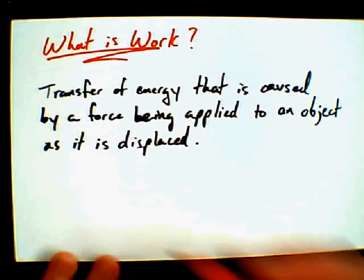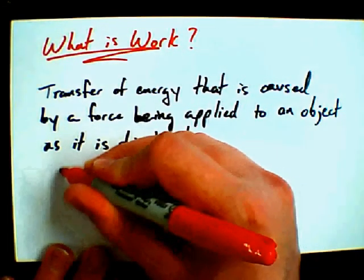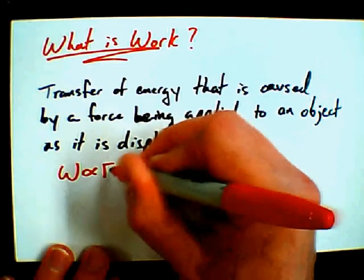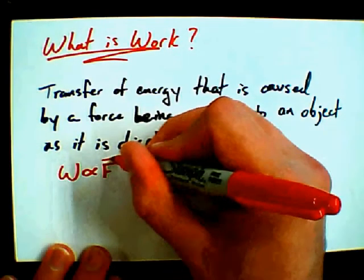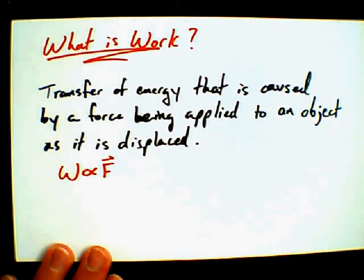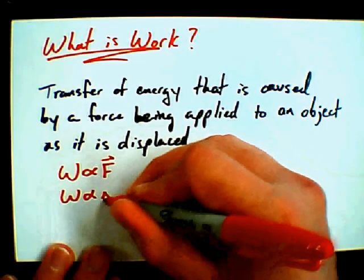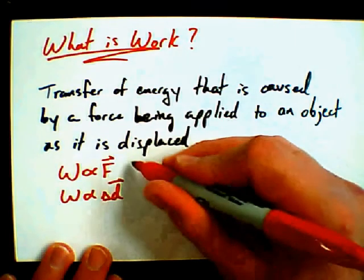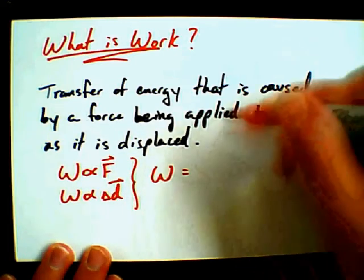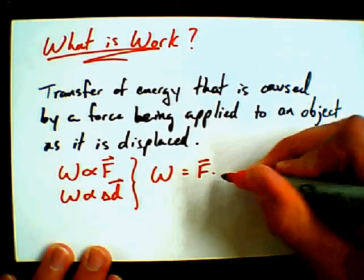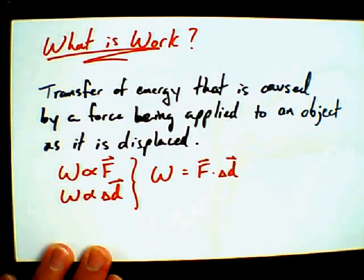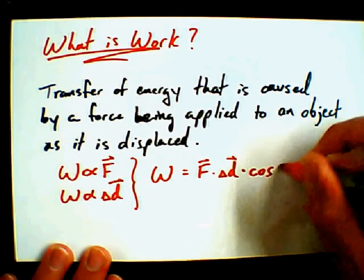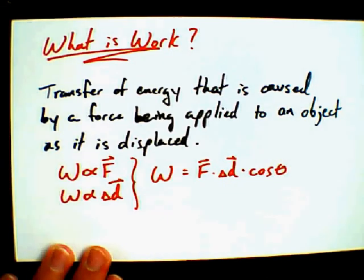In physics, we define it with proportionalities first. Work is proportional to force — if I apply a force to something and it moves, I'm doing work. Work is also proportional to the displacement of something. We tie these together into the equation: Work equals force times displacement times cosine of the angle between those two vectors.